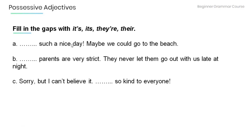Now read the following sentences and fill in the gaps with it's, its, their, or they're. a) ___ such a nice day. Maybe we could go to the beach. b) ___ parents are very strict. They never let them go out with us late at night. c) Sorry, but I can't believe it. ___ so kind to everyone.